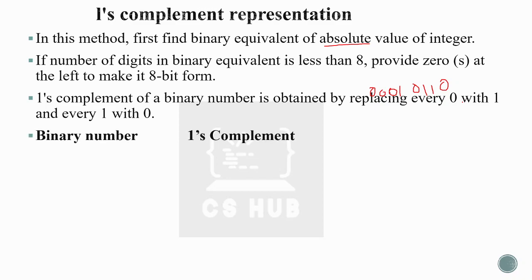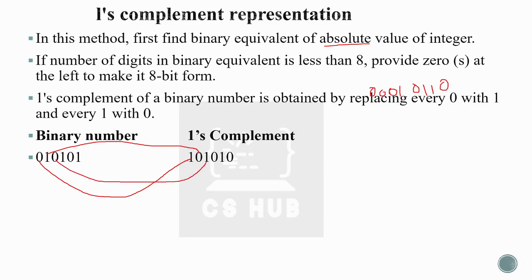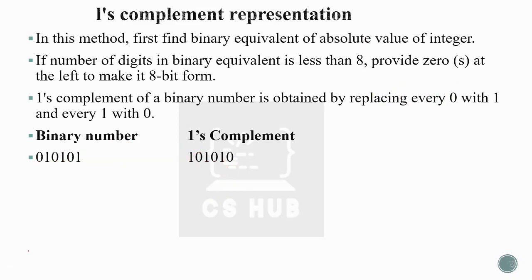Let's take a few examples. Suppose the number is 010101. When we apply one's complement, we flip each bit: the first 0 becomes 1, the 1 becomes 0, the next 0 becomes 1, and so on — giving 101010. Another example: 100100 becomes 011011. Every 0 is changed to 1 and every 1 is replaced with 0. This is the method.